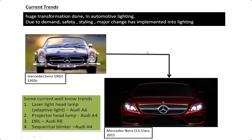Some other trends you should know about are laser headlamps and adaptive lights. With adaptive lights, when a driver coming from the opposite direction looks at your headlamp, the focus is not directly on their eyes — the light direction changes automatically. This is called an adaptive light. Next is projector headlamps — projector tail lights are also there.